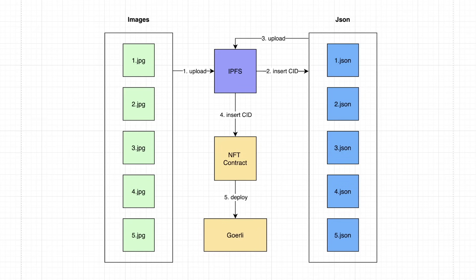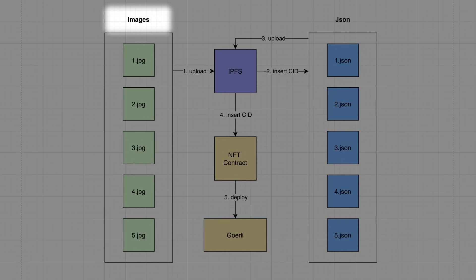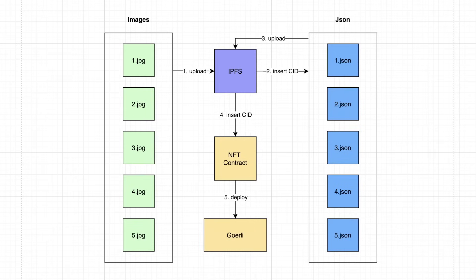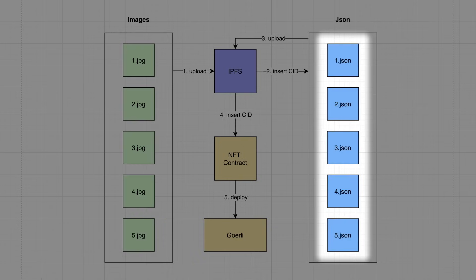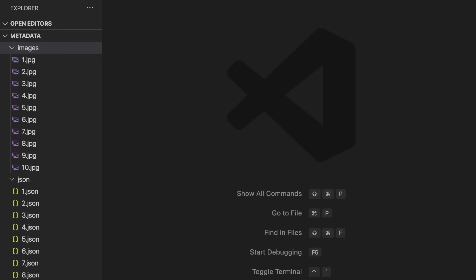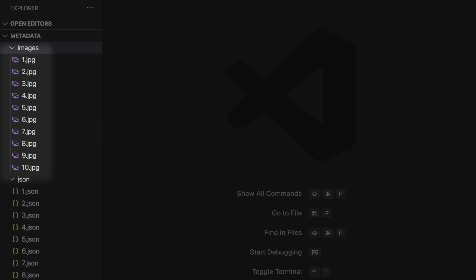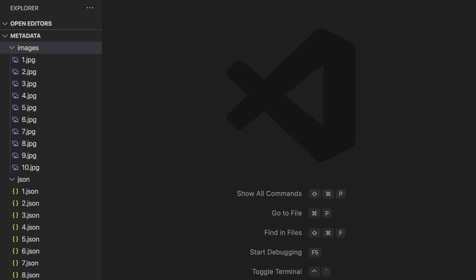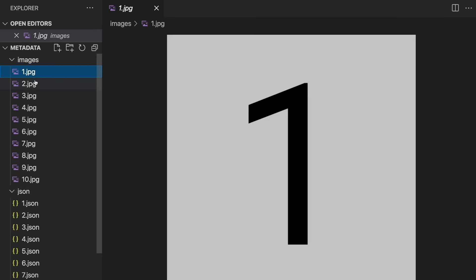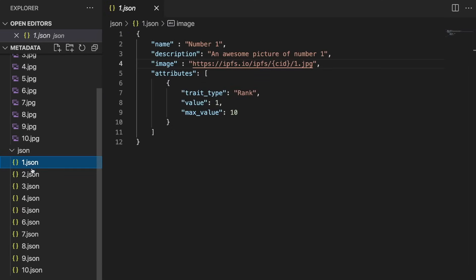The first thing we need to do is make sure our metadata is structured to scale to 10,000 NFTs. You'll want to create two folders: the first will be called images and the second will be called JSON. Inside these folders, we're going to label our images from one through to 10,000 and then we'll have to do the same thing for the JSON files. In this example I'm just using 10 images, but it's the exact same process for 10,000 images. You can see that my images are just numbers from one to 10 and the JSON files are just describing each image.